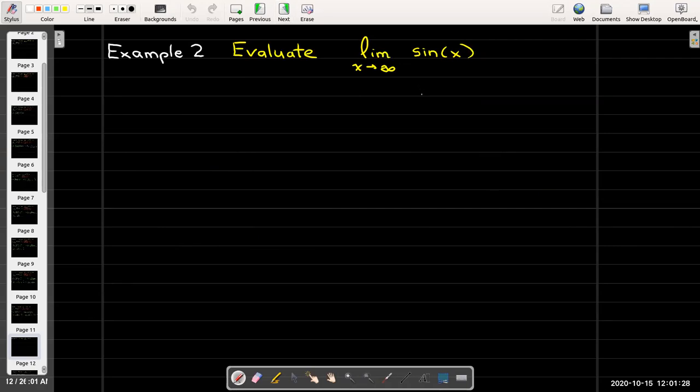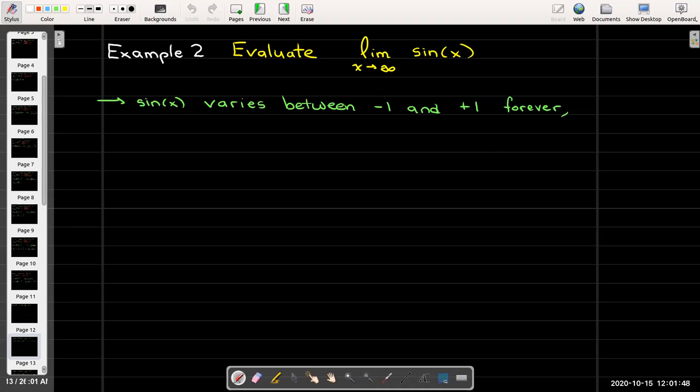In our second example we'd like to evaluate the limit as x goes to infinity of sin(x). Now sin(x) as x changes varies between -1 and +1 and that happens forever. It doesn't matter how big x is, it's always going to go between -1 and +1. And so sin(x) is never going to get close to any single number as x grows larger. So this limit does not exist.